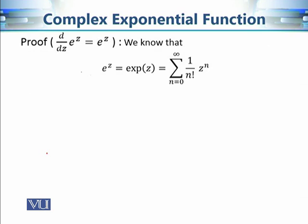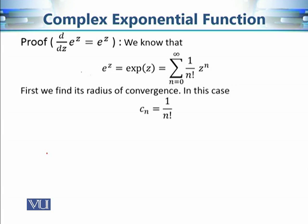Let's begin the proof of the first property. The only definition we have of the complex exponential is its series form, so we must use term-by-term differentiation. To apply that result, we first need to find the radius of convergence of this power series. We use D'Alembert's ratio test, where the n-th term is 1/n!.